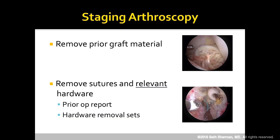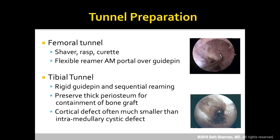At the initial staging arthroscopy, we want to remove the prior graft material, remove any sutures and relevant hardware, and can leave irrelevant hardware alone. Definitely have the prior surgical reports, and have hardware removal sets in the room — have all your tools available, because nobody looks good removing hardware. On the femoral side, use a shaver, rasp, and curette; flexible reamers through an anteromedial portal over a guide pin are useful to freshen up the tunnel. On the tibial side, use a rigid guide pin with sequential reaming, and preserve the thick periosteum for containment of bone graft.